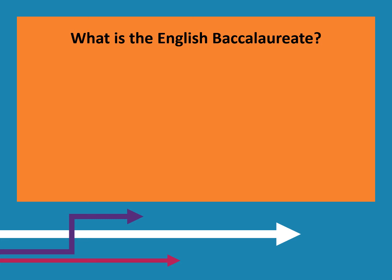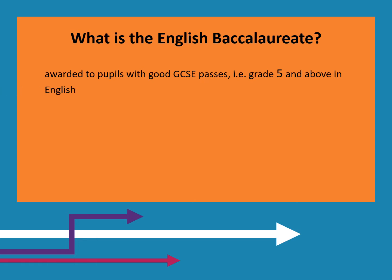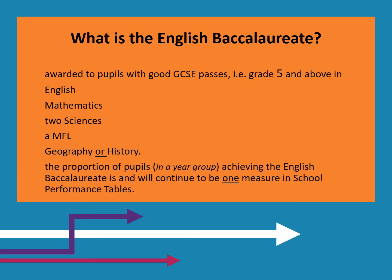The English Baccalaureate is not a qualification in itself — it reflects achievement in a range of broad-based academic qualifications at GCSE. It is awarded to pupils with good GCSE passes, i.e. Grade 5 and above, in English, Mathematics, two Sciences, a Modern Foreign Language, and Geography or History. Crucially, the proportion of pupils achieving the English Baccalaureate is and will continue to be one measure in school performance tables, which is why the national context is such an important consideration for us.